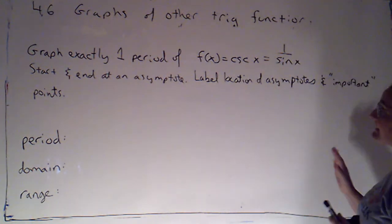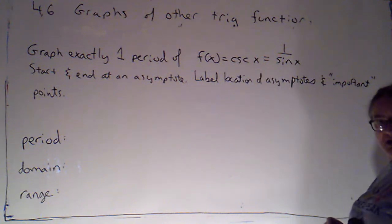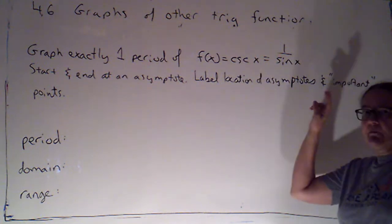I'm asking you to graph exactly one period, start and end in an asymptote, make sure you label the locations of the asymptotes and also the important points.